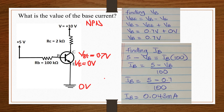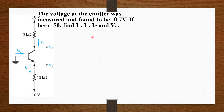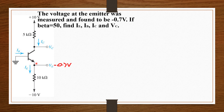Now our last question. The voltage at the emitter was measured and found to be negative 0.7 volts. If beta equals 70, find IE, IB, IC, and VC. Looking at this circuit, the emitter voltage is negative 0.7 volts. The arrowhead at the emitter side moves from base to emitter, and current moves from P to N, so the base is P, the emitter is N, and the collector is also N — an NPN transistor.